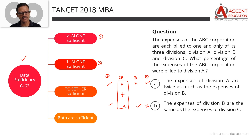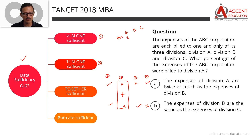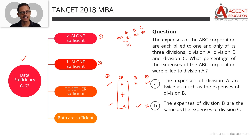Keep this perspective in mind. The question: The expenses of the ABC Corporation are each billed to one and only one of its three divisions — Division A, Division B, and Division C. What percentage of the expenses of ABC Corporation were billed to Division A?